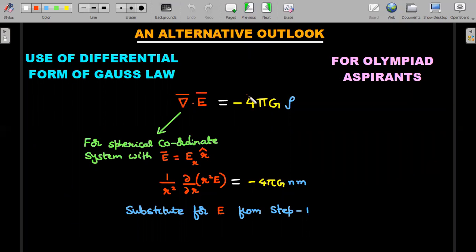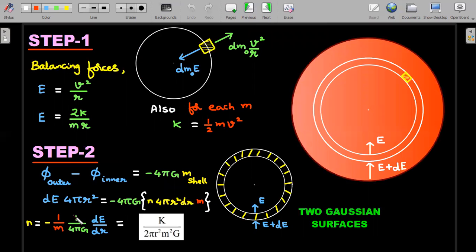Let's try to see an alternative outlook. Some olympiad aspirants would be knowing this: that's nothing but taking up the differential form of Gauss's law. This is strictly for olympiad aspirants. Students who are not associated with olympiads may ignore this particular step, but there's no harm in knowing extra things.